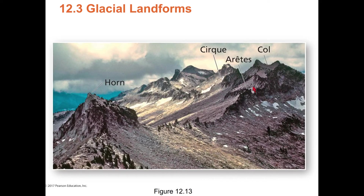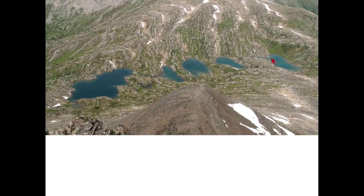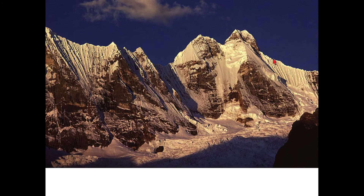Here we have an arête — a very steep, narrow ridge — a horn, a cirque, and a col. There are five paternoster lakes down this U-shaped valley. This ridge would be an arête and that's a col — a really good col. These are the Minarets down by Devil's Postpile near Mammoth Lakes — a very, very steep ridgeline.